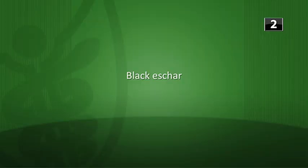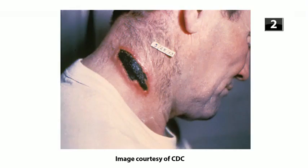Next: what is the skin lesion finding associated with bacillus anthracis infection? It's going to be a black eschar with necrosis surrounded by an edematous ring, caused by lethal factor and edema factor. Here's an image of a skin lesion in a patient infected with bacillus anthracis.